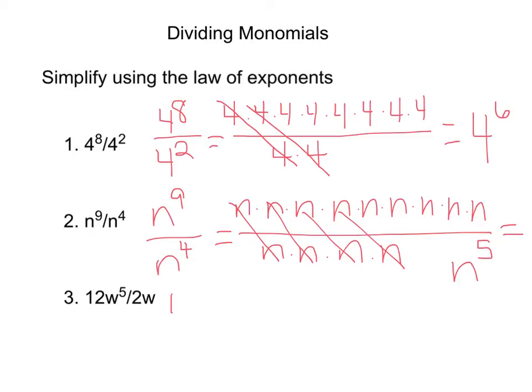On this last one, we have coefficients. 12w to the fifth power over 2w. It's going to work the same. The coefficients have nothing to do with the variables and the exponents, so you're just going to divide them like normal. 12 divided by 2 is 6, so I know that my answer will begin with 6.